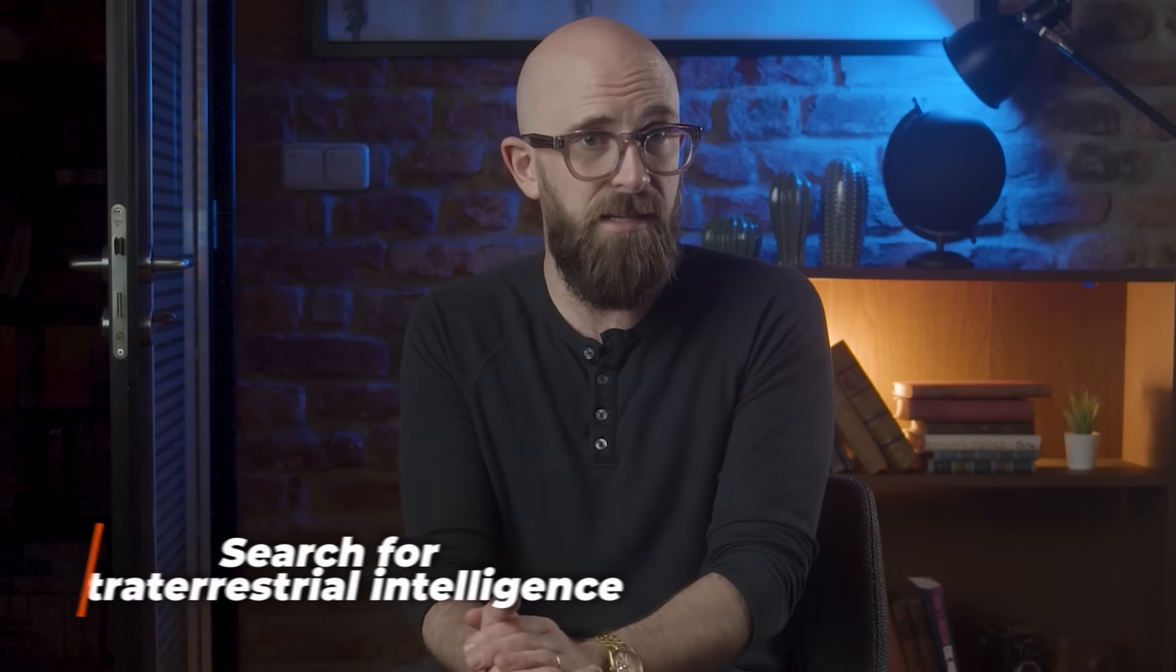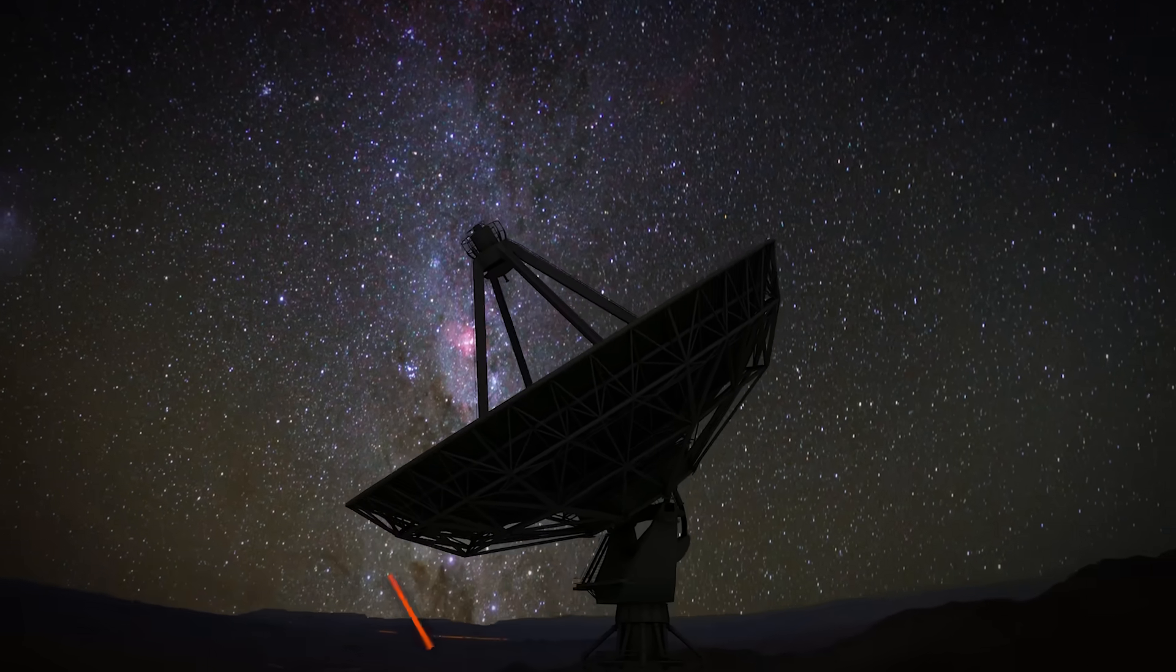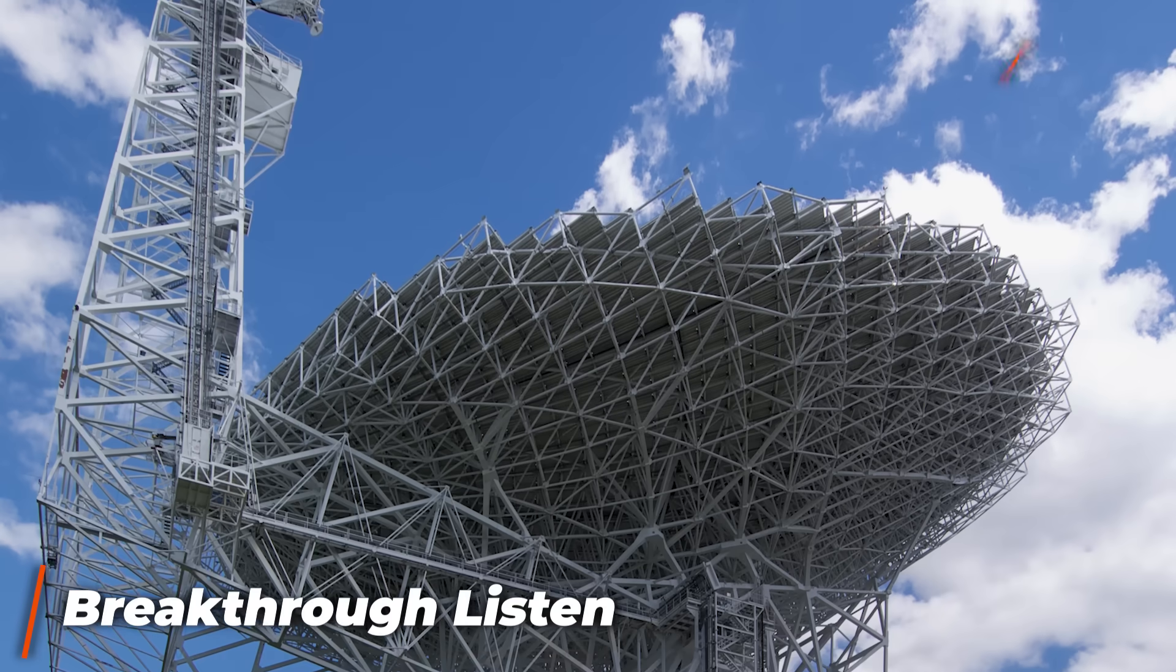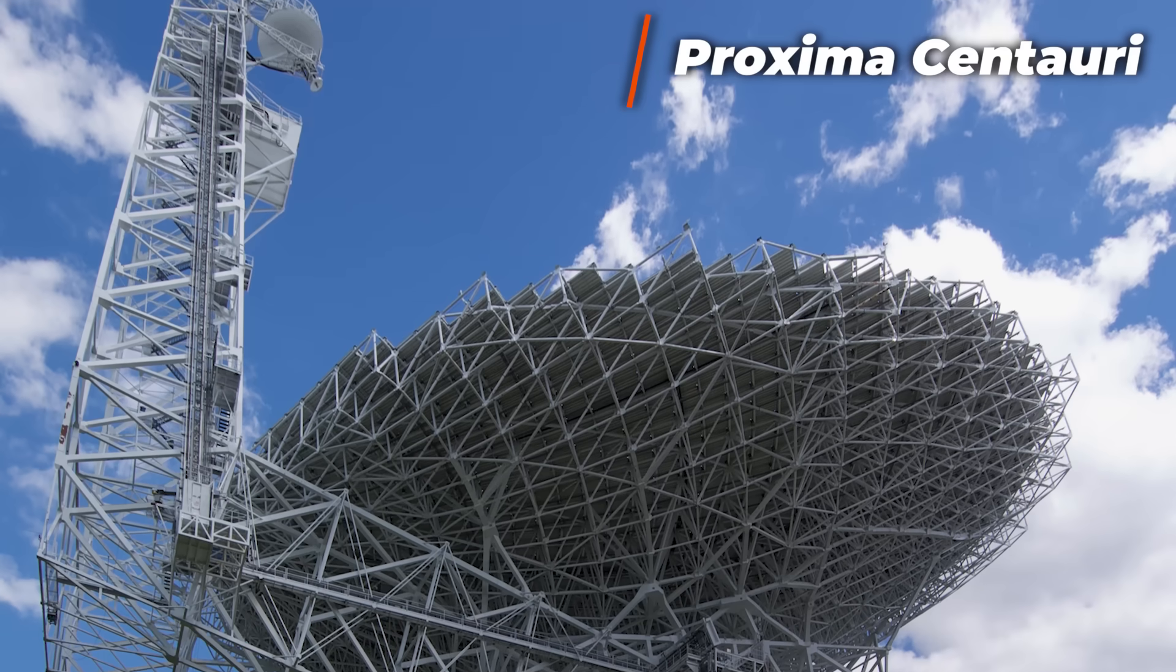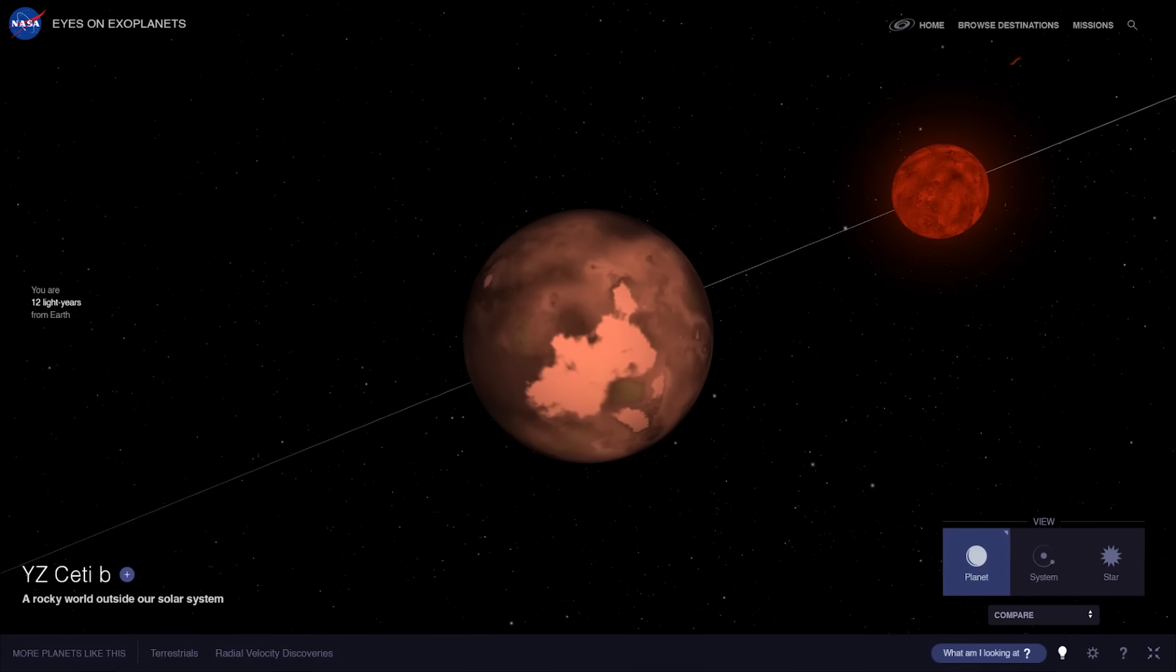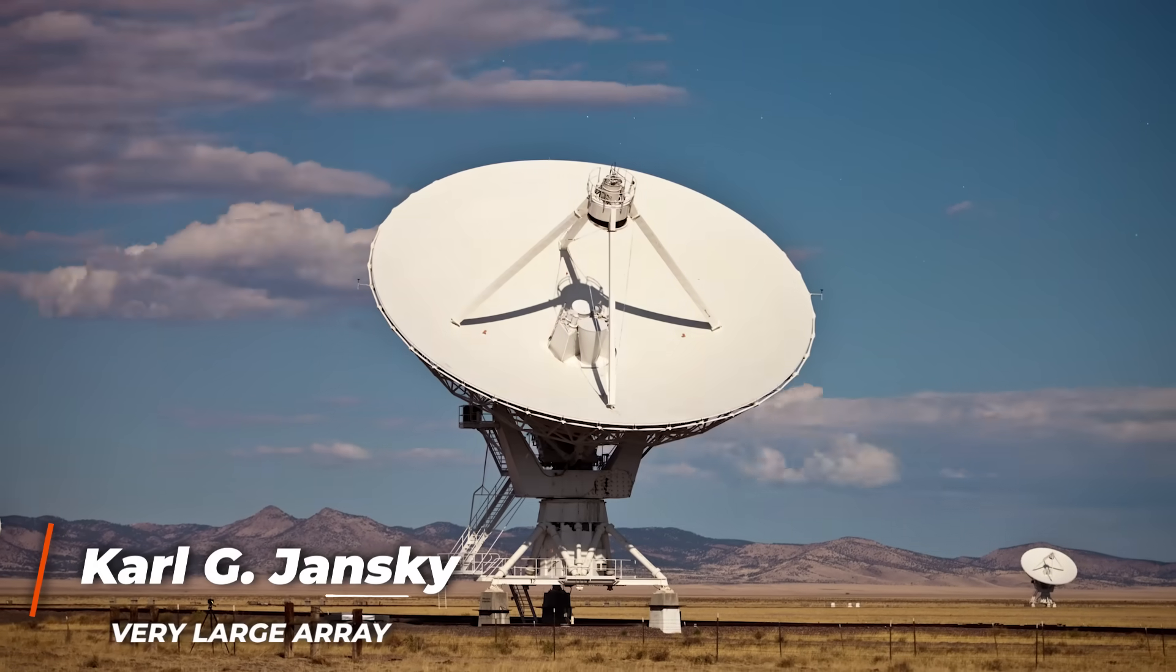As technology has improved, so has our capacity to scan the night sky. Over the last couple of decades, there have been several promising leads, such as the Breakthrough Listen project that recorded signals coming from a small red star called Proxima Centauri, or signals coming from the YZ Ceti, and the rocky exoplanet that orbits it called YZ Ceti B, and the Karl G. Jansky very large array of telescopes in New Mexico.